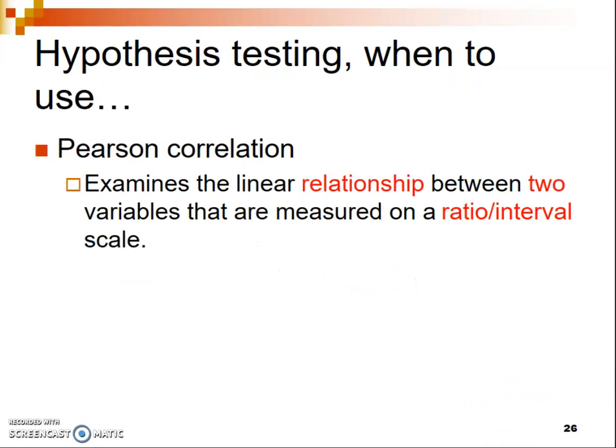You should use the Pearson correlation hypothesis test specifically to examine whether there is a relationship between two variables measured on an interval or ratio scale. You'll notice the word 'linear' in this explanation, and that word is fairly important because the Pearson correlation only identifies the extent to which your variables form a straight line — either slanted up, like a positive correlation, or slanted down, like a negative correlation.